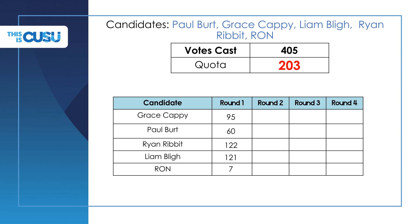As no one has had a majority, we eliminate the lowest place candidate — RON — and redistribute their votes. On the second round of voting, Grace still has 95, Paul 60, Ryan 122, and I have now got 123 votes. You may notice only two votes are actually different from the first round. This shows that although RON had seven votes that we redistributed, only two of those seven students actually gave a second choice candidate. Since a majority still has not been reached, we eliminate the lowest place candidate, this time Paul, and redistribute their votes.